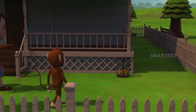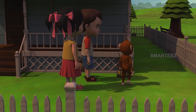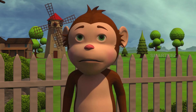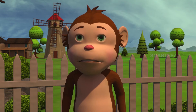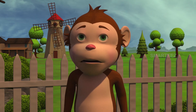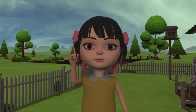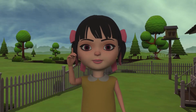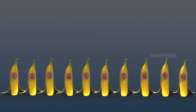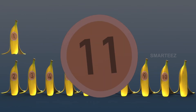Rangu, throw all these banana peels into the trash, but count again while throwing them. I don't know what comes after 10. Can you please tell me what comes after 10? We know Rangu already had 10 bananas. So we'll start from the next number, which is 11. When one joins 10, it becomes 11.